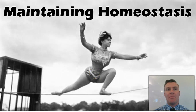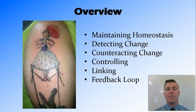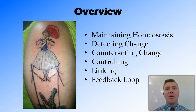In this video, we're going to look at the balancing act that is maintaining homeostasis. We're going to look at the main components in maintaining homeostasis, including detecting change and counteracting change. And we're going to look at the role of the nervous system in controlling and linking this detecting and counteracting change, as well as putting it all together into what we refer to as a feedback loop.